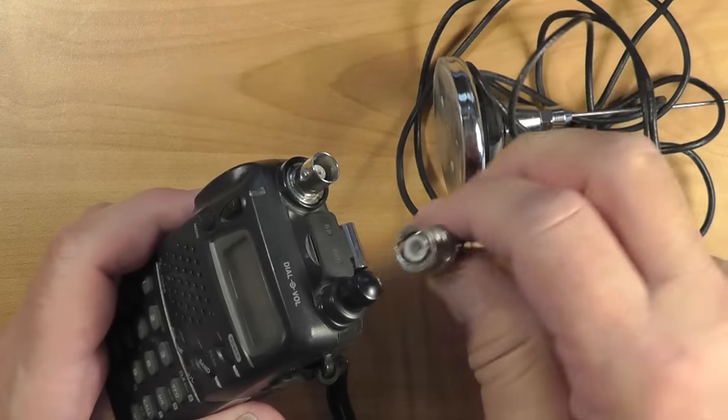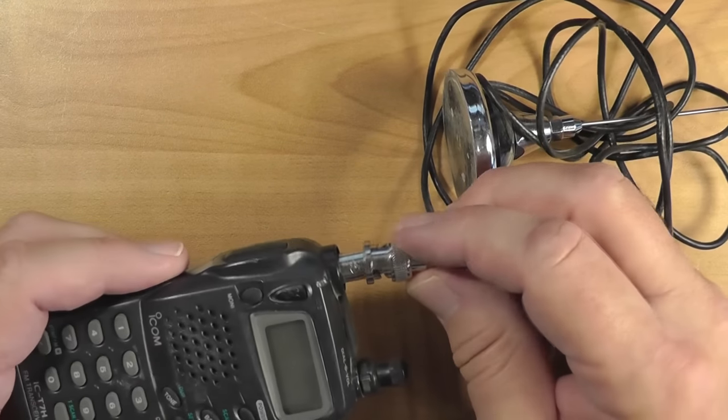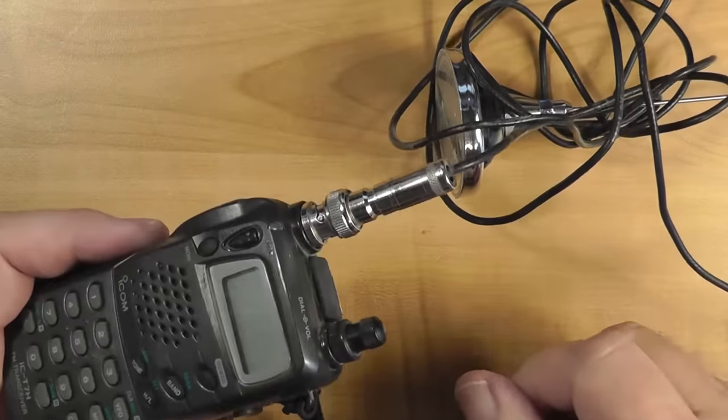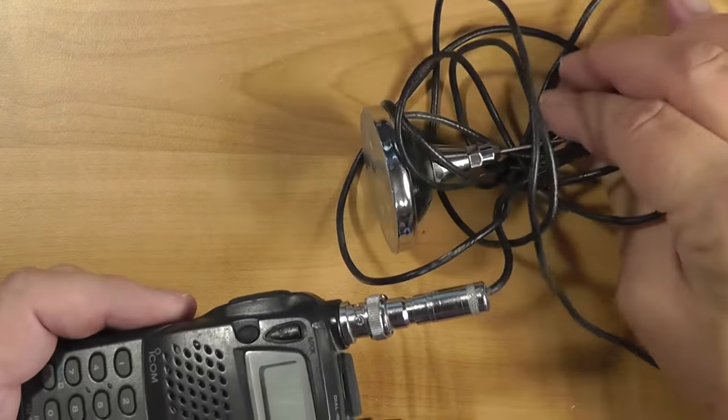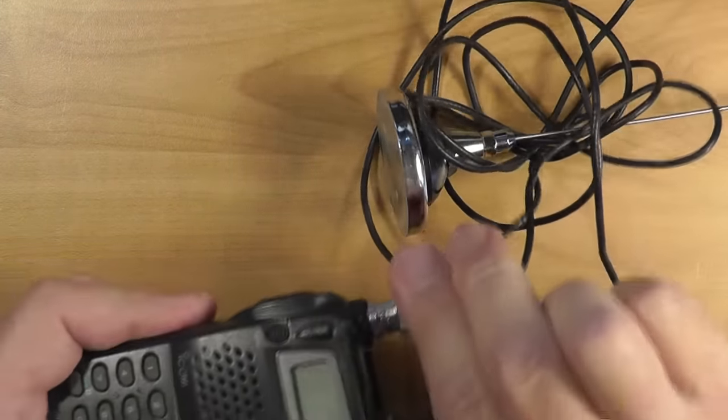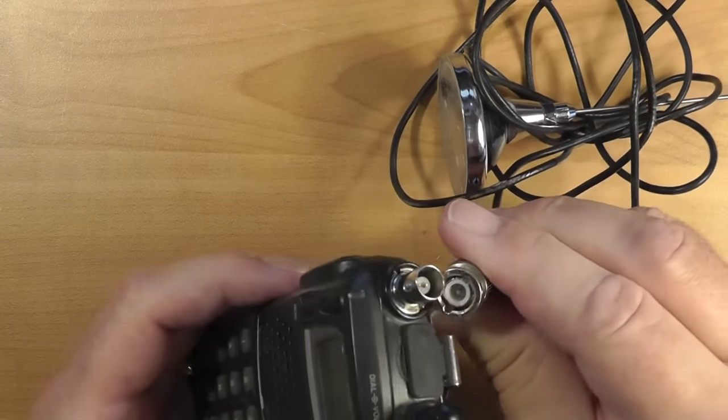BNC connectors are used quite a bit outside of ham radio, used for connecting various cables together, such as for networking, video signals, timing signals, instrumentation, and so on. The BNC connector was once quite common on handhelds. It is possible to use an automobile rooftop antenna that has a BNC connector on the end, like this one I acquired many years ago.